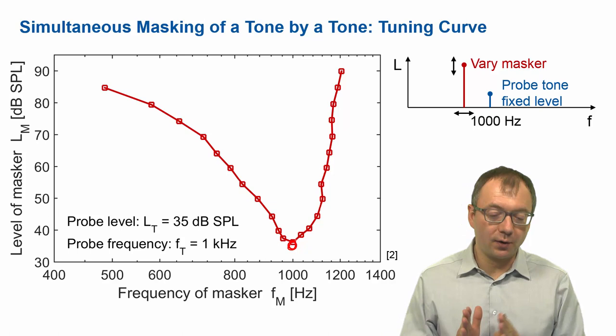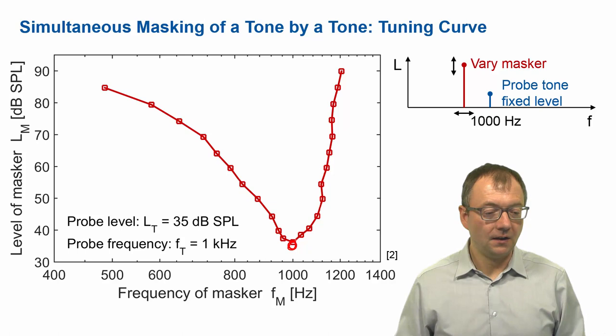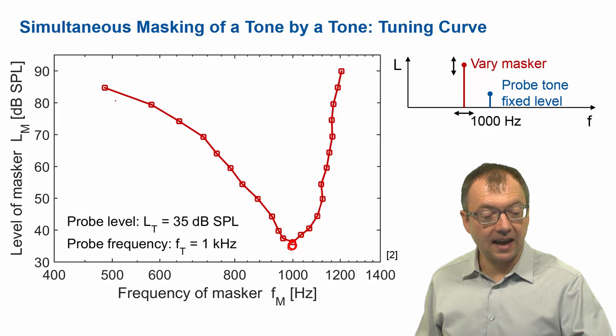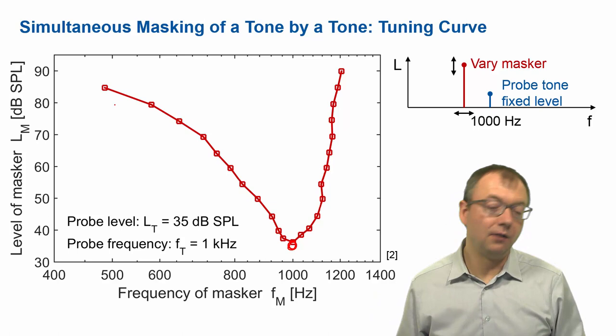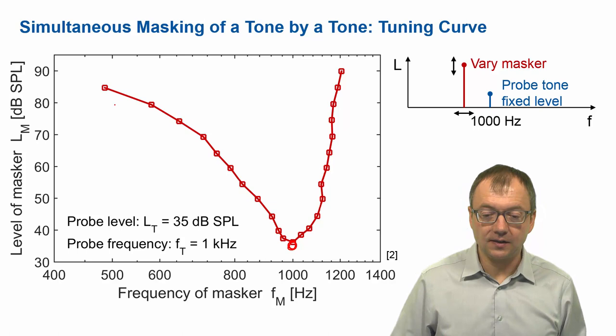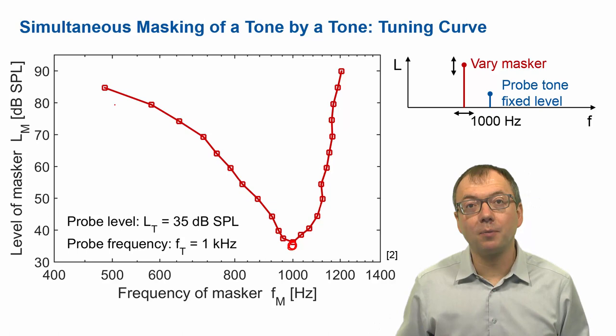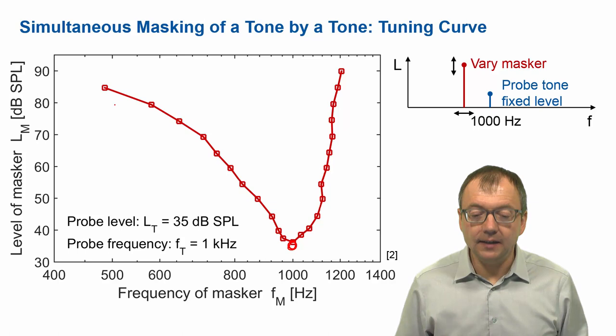You see that the masker level increases the further away the masker is in frequency from the probe. For a masker of about 500 hertz, the masker has to be 80 decibels to mask the probe at one kilohertz. And even more so, if the masker is at a higher frequency it will be very hard to mask a low frequency probe tone. The tuning curve increases sharply towards higher frequencies.